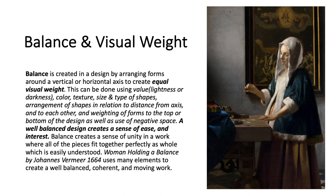In Jan Vermeer's painting, Woman Holding a Balance, painted in 1664 — he was a Dutch painter — you can see that he used many elements to create a well-balanced, coherent, and moving work. One of the key hallmarks of his work is the use of light and perspective. The light is shining on the focal area of the woman holding the balance. It's an asymmetrical design — if we draw a line down the center, we can see that there's more going on on the right-hand side, but it still feels well-balanced.